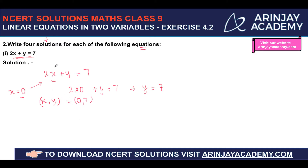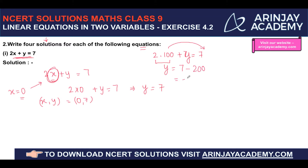You can choose any value of x. For example, x equal to 100: 2 into 100 plus y equals 7, so y equals 7 minus 200, which is minus 193. So when x is equal to 100, y is equal to minus 193, giving the solution (100, −193).